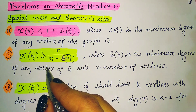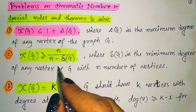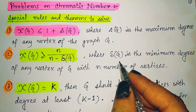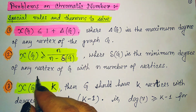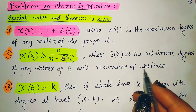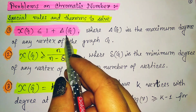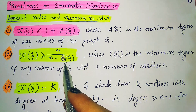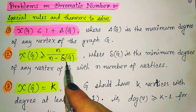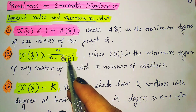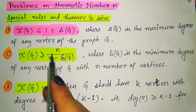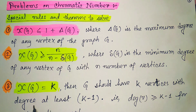The second rule is: the chromatic number of G is greater than or equal to n divided by (n minus δ(G)), where δ(G) is the minimum degree of any vertex of G and n is the number of vertices. So according to the maximum and minimum degrees we can find the threshold of the chromatic number.